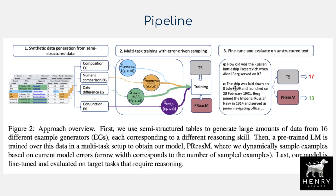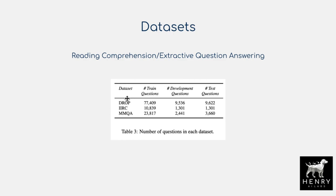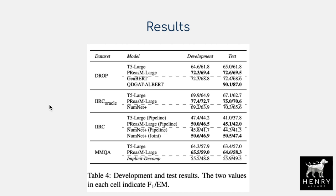The evaluation datasets are DROP, IRC, and MMQA, with training, development, and test splits that are much smaller than the 5 million pre-training questions. The results are exciting: there is a large gain over the T5-large baseline on DROP, going from 65 to 72.6 — a roughly 7% improvement in exact match F1, which is a substantial gain for these systems, especially over a strong baseline like T5-large.